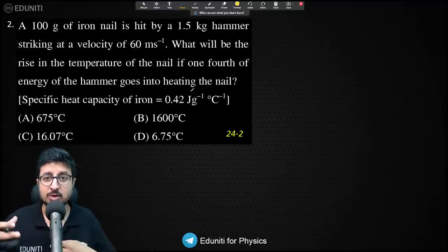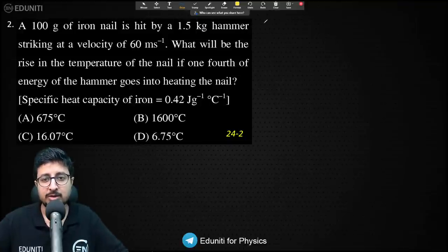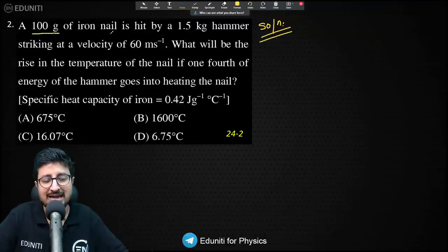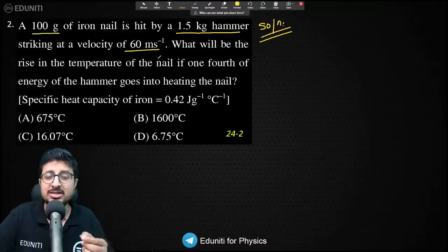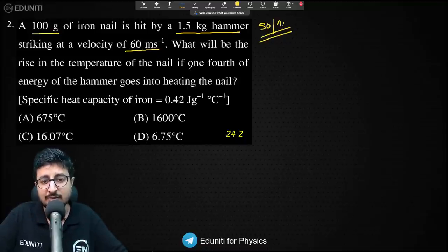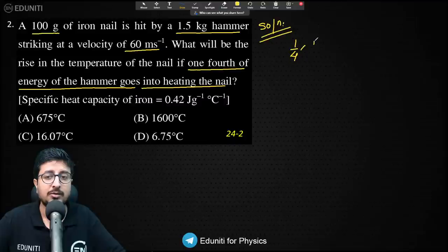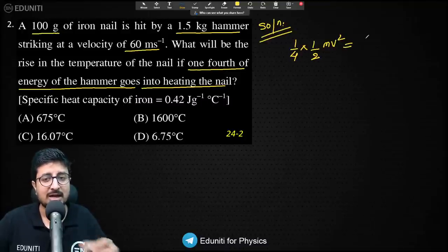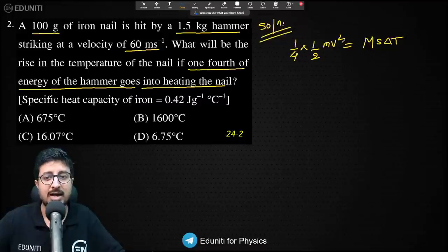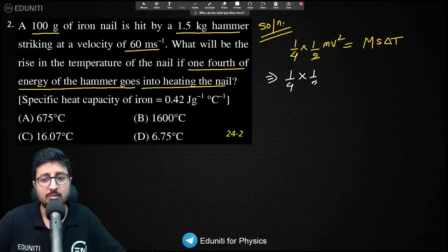Question 2 involves calorimetry using Q = msΔT. A 100-gram iron nail is hit by a 1.5 kg hammer with a velocity of 60 m/s. We need to find the rise in temperature of the nail if one-fourth of the hammer's kinetic energy goes into heating it. So (1/4) × (1/2) × mv² = msΔT, where m is the hammer's mass = 1.5 kg = 3/2 kg.